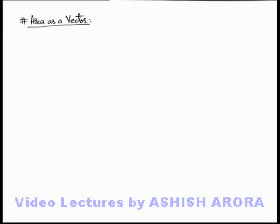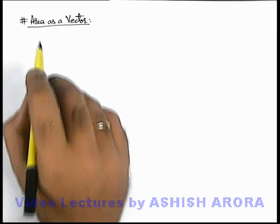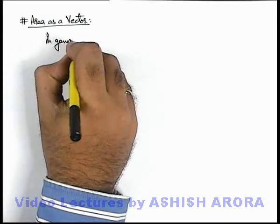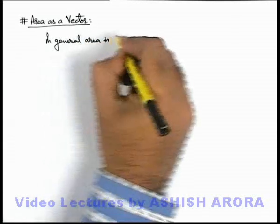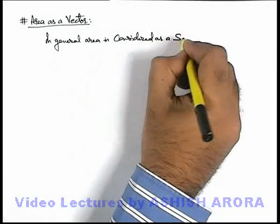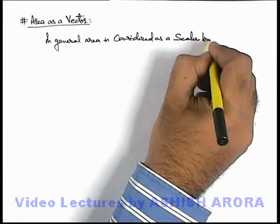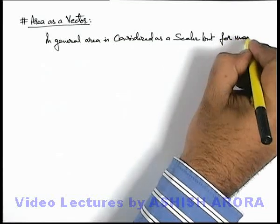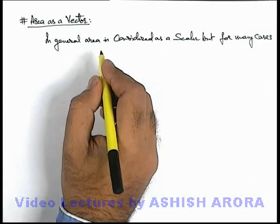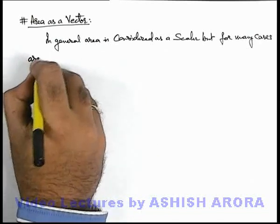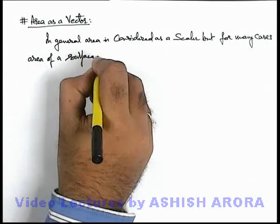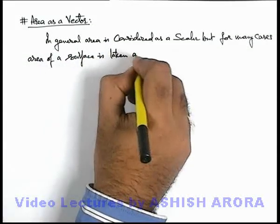Dear students, let's discuss an important concept: area as a vector. We know that in general, area is considered as a scalar. But for many cases, like the case we are going to see here — in electric flux also — the area of a surface is taken as a vector.